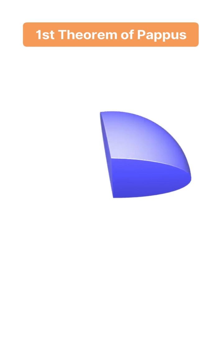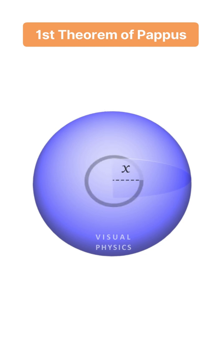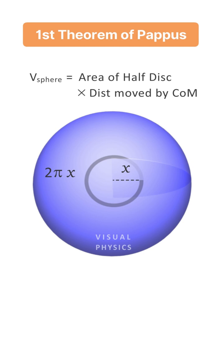If we revolve this disk about such an axis, then a sphere is generated. If the centre of mass of the disk is at a distance x, then the distance travelled by its centre of mass will be equal to 2π times x. As per this theorem, the volume of the sphere generated will be equal to the area of the semicircular disk multiplied by the distance travelled by its centre of mass.